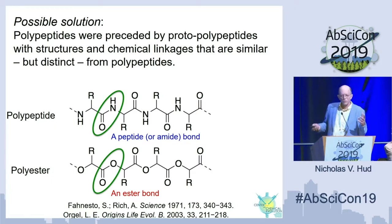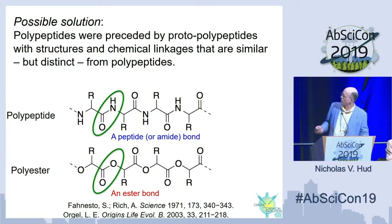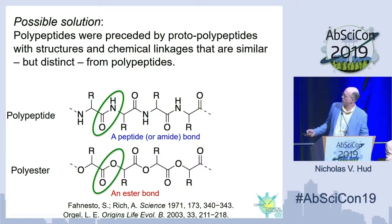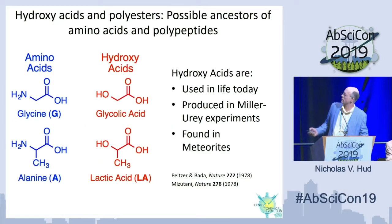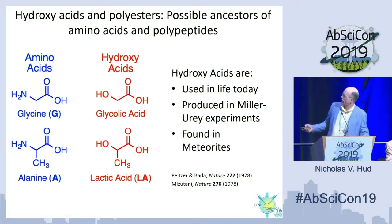A possible solution is that polypeptides are preceded by what we call protopolypeptides — with structures and chemical linkages that are similar but distinct. Just change one atom and it can totally change the chemical properties of a molecule. An obvious candidate is that polypeptides were preceded by polyesters — not an original idea; the ester linkage was proposed back in at least 1971 by Rich, and later Orgel discussed it. We like this idea because amino acids have hydroxy acid analogs: just change the amino group to a hydroxyl group.